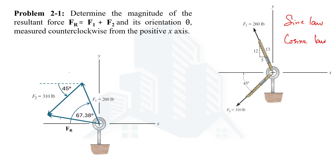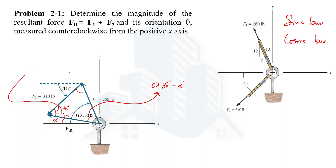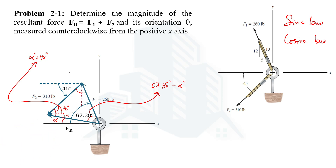Let's call alpha the angle the resultant force makes with the negative x-axis. When using the sine law, the internal angles of the triangle are important. The first internal angle is 67.38 minus alpha. Since the second force makes 45 degrees with the negative x-axis, the second internal angle is alpha plus 45 degrees.